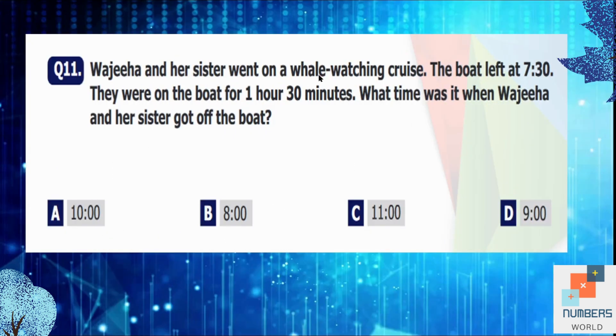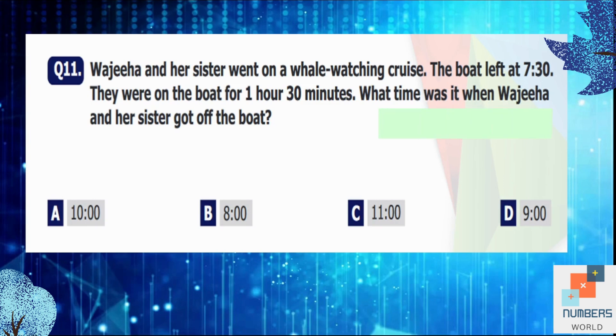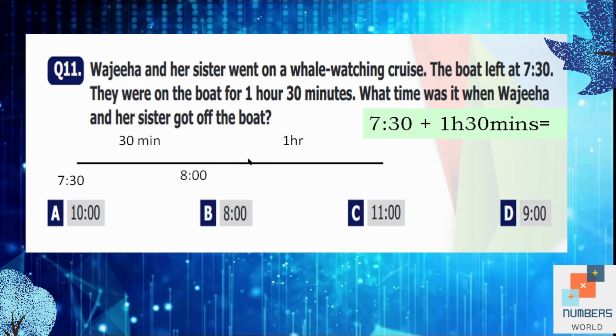Question number 11: Vijiha and her sister went on a whale watching cruise. The boat left at 7:30. They were on the boat for 1 hour and 30 minutes. What time was it when Vijiha and her sister got off the boat? We are going to add 1 hour and 30 minutes into 7:30. If the starting time is 7:30, we will add 30 minutes first into it. The answer will be 8 o'clock, and then we will add remaining 1 hour into 8 o'clock. The answer will be 9. So Vijiha and her sister got off the boat at 9 o'clock. So D is the correct option.